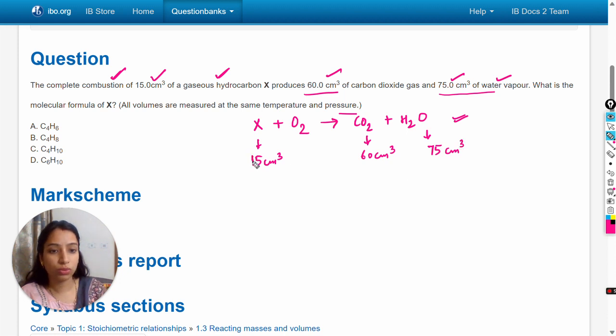Divide: 60 divided by 15 is 4, and 75 divided by 15 is 5. So if this is 1 mole, then this will be 4 and 5.